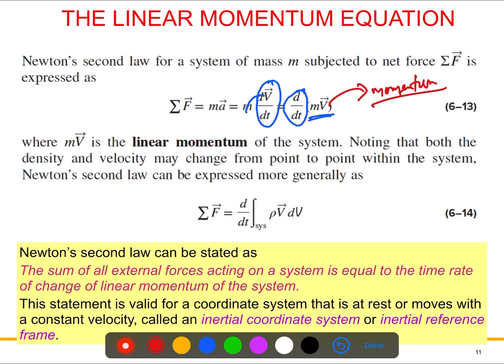Newton's second law is telling us about the rate of change of momentum — it is equal to the sum of the forces acting on the system. In other words, we can state Newton's second law as: the rate of change of linear momentum is equal to the sum of all external forces acting on the system.